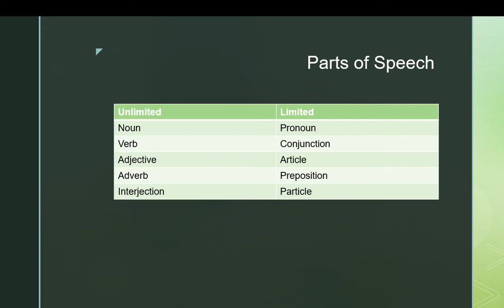What we're going to be going over in this particular video are the parts of speech. This is kind of a point of contention among grammarians because no one can decide how many parts of speech there are in English. The way I personally like to classify it is that there are 10 parts of speech. Some people do not believe in the existence of interjections or of particles, and some people like to split the adverb into more categories. I've divided the parts of speech into two categories that I personally think are helpful: the unlimited and the limited parts of speech.